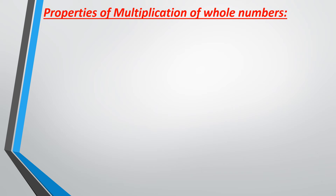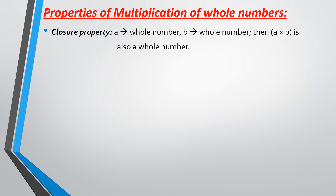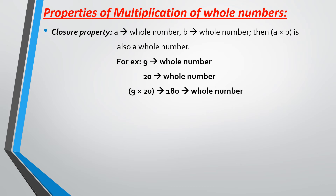Properties of multiplication of whole numbers. The first property is closure property: when A is a whole number and B is a whole number, then the product of A and B will also be a whole number. Here 9 is a whole number and 20 is also a whole number, so the product of 9 and 20 will also be a whole number. The product of 9 and 20 is 180, and we know 180 is a whole number.